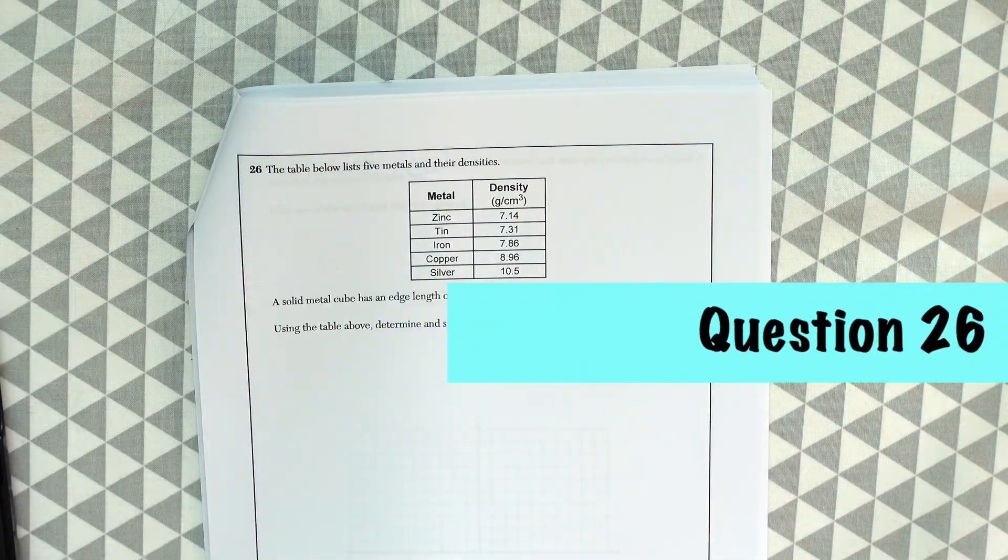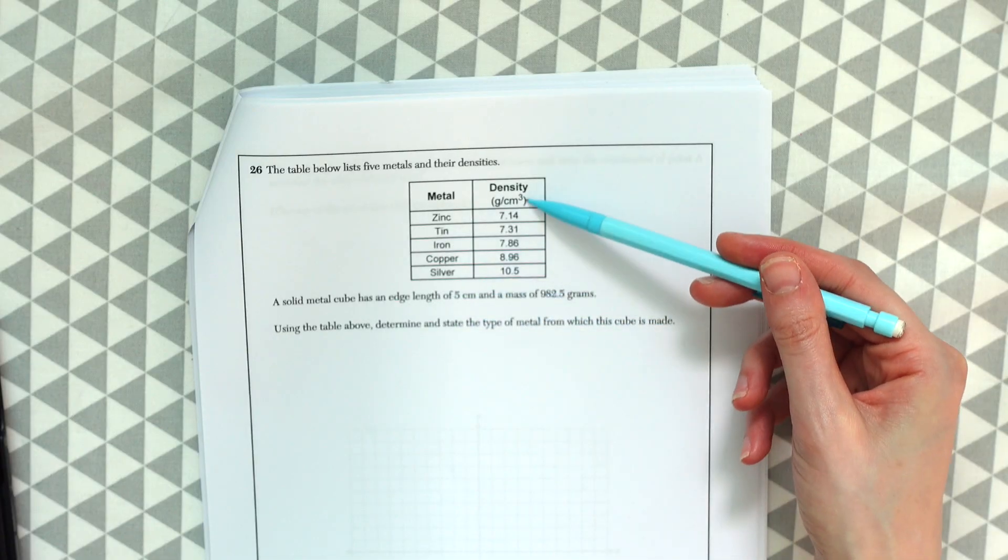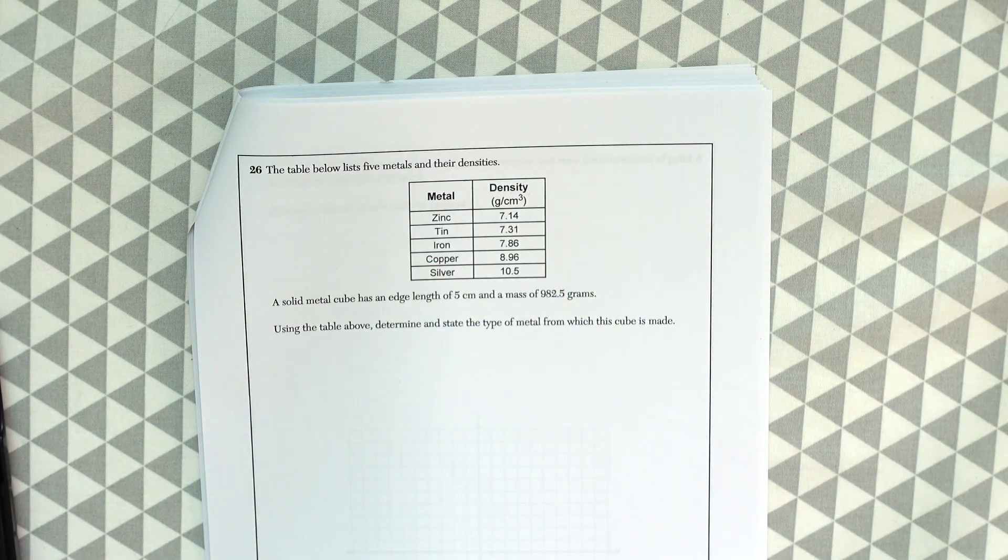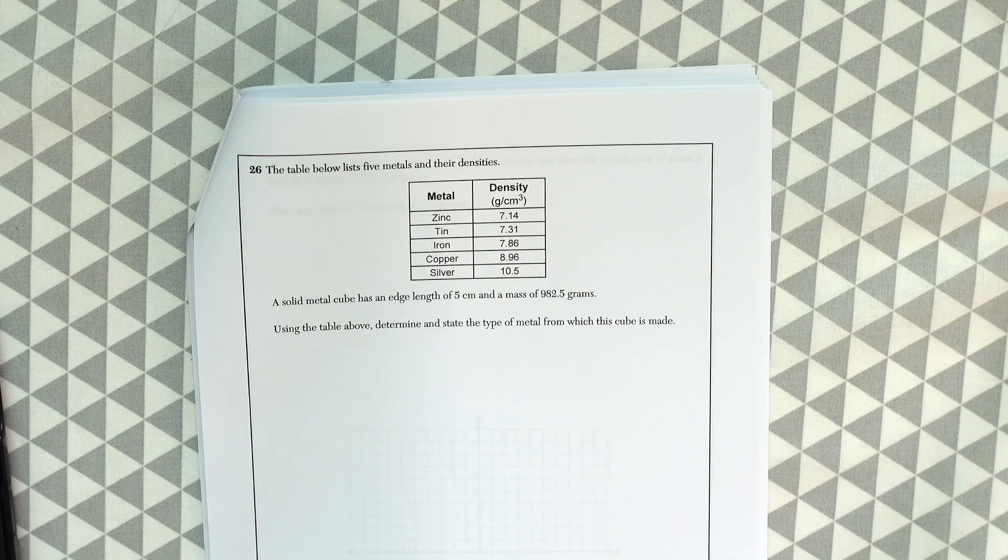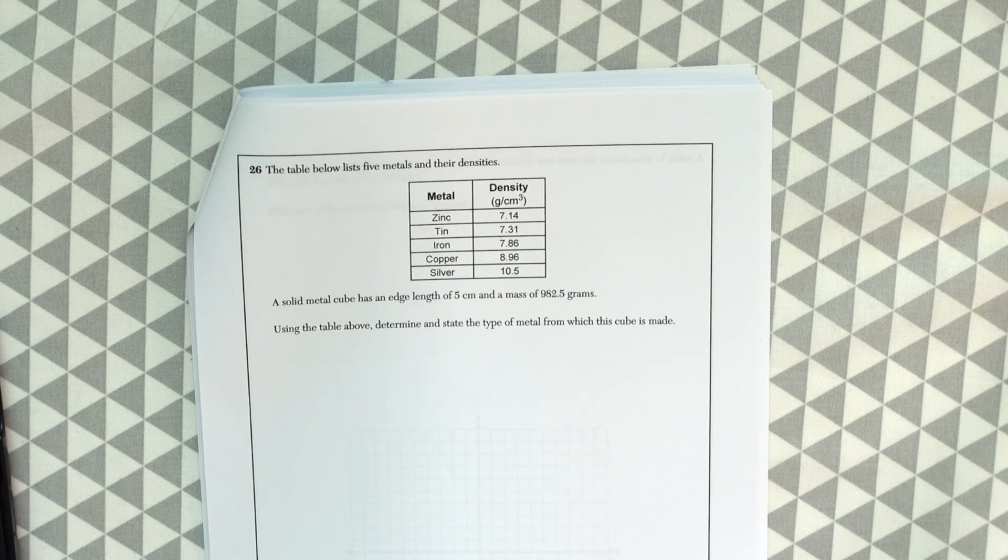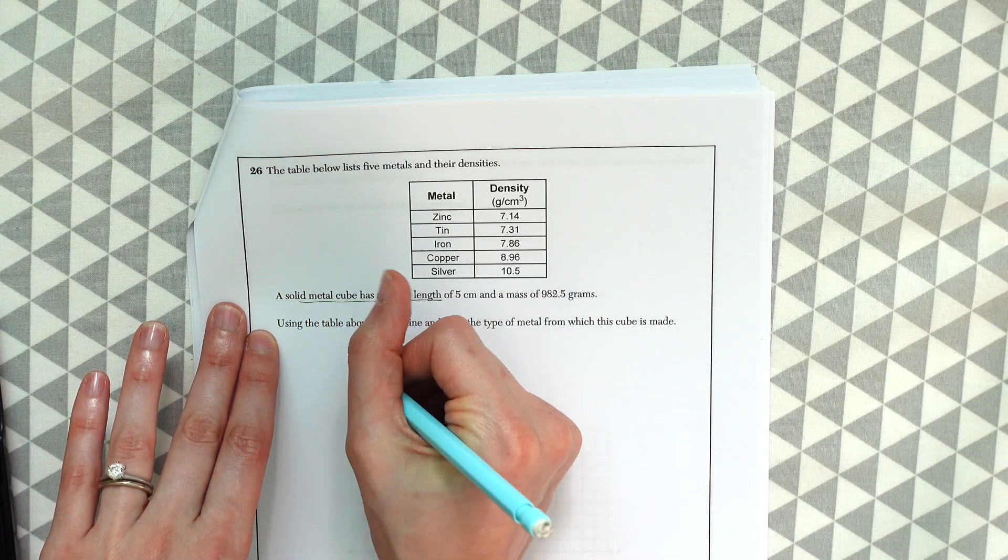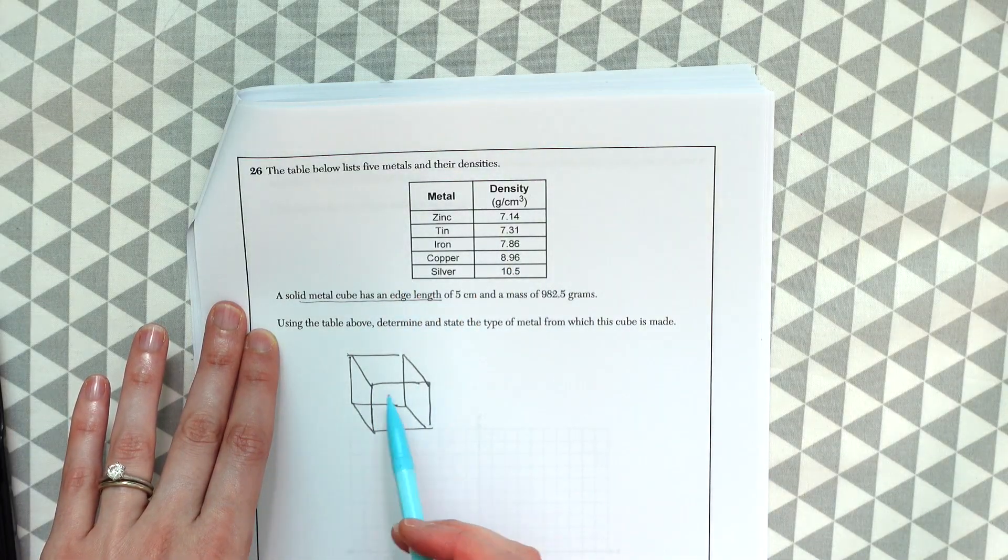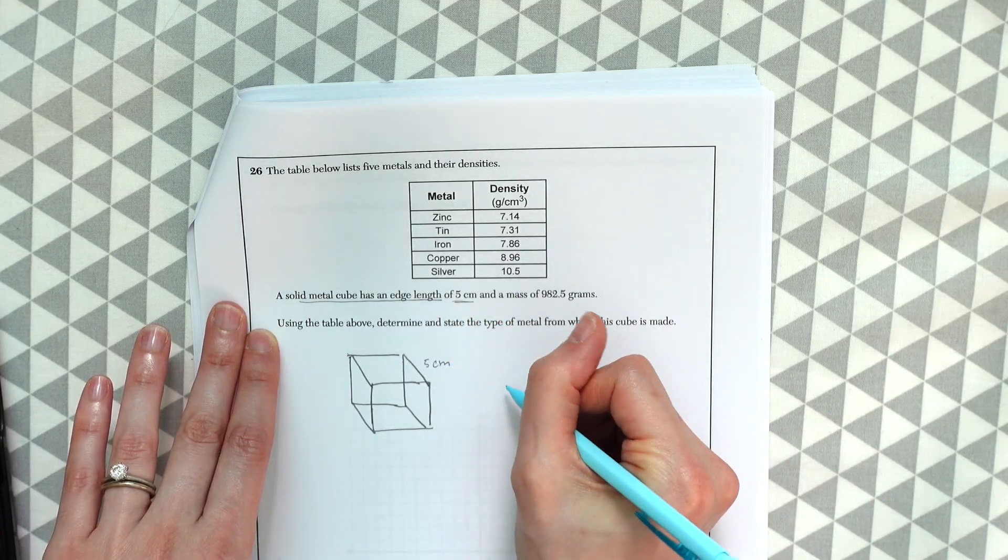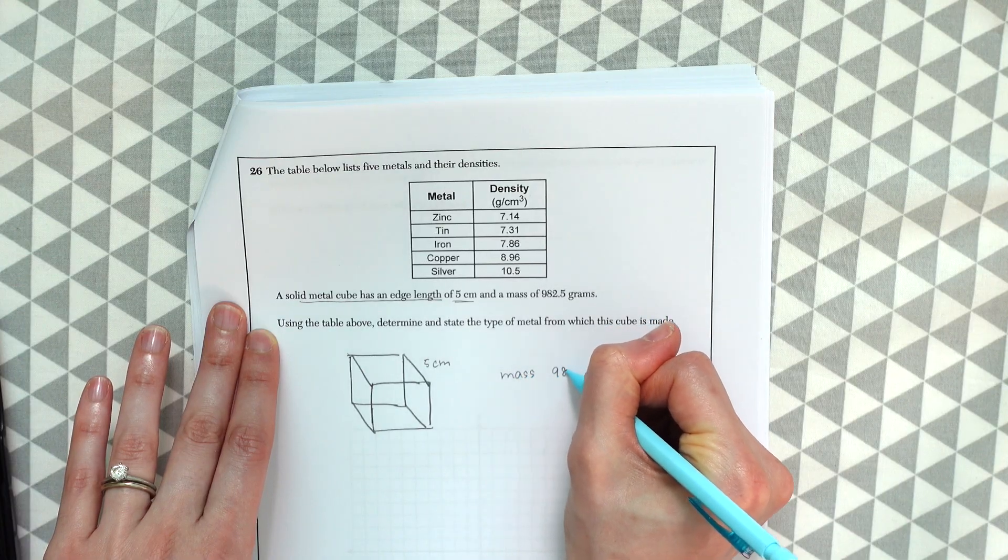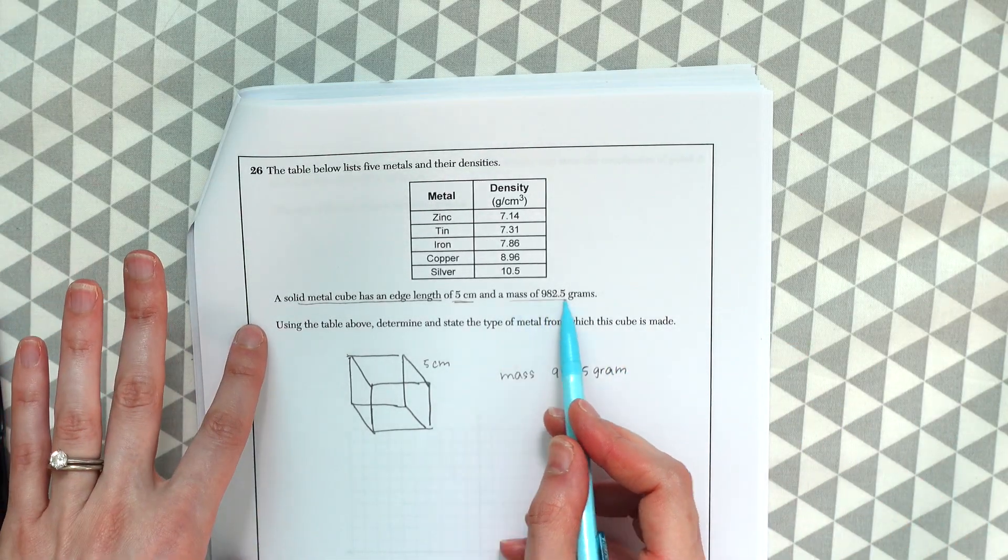Question 26. The table below lists five metals and their densities. So here we have metal we have zinc tin iron copper and silver and then we have these different densities. A solid metal cube has an edge length of five centimeters and a mass of 982.5 grams. Using the table above determine and state the type of metal from which this cube is made. So if we have a cube metal solid metal cube, so a cube it's going to be the same length on all sides we're saying that it's five centimeters on all sides and it has this mass of 982.5 grams. So it's saying what kind of metal could this be made from based on what the mass is.